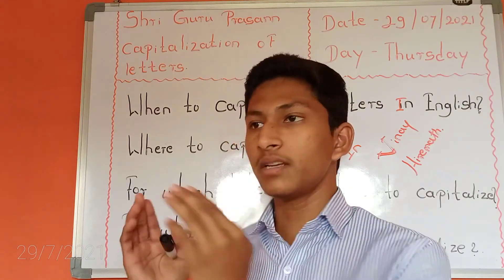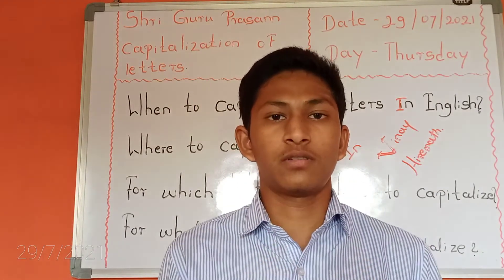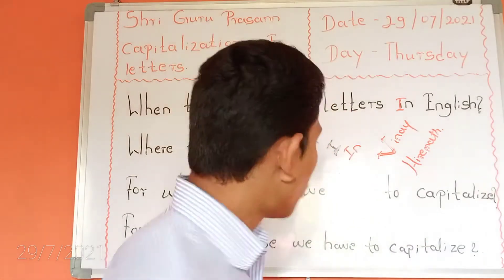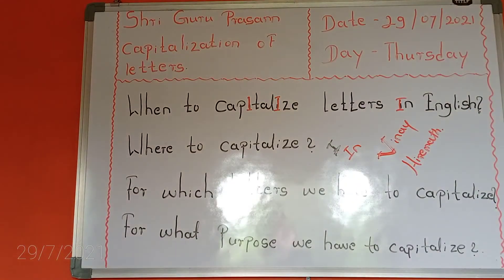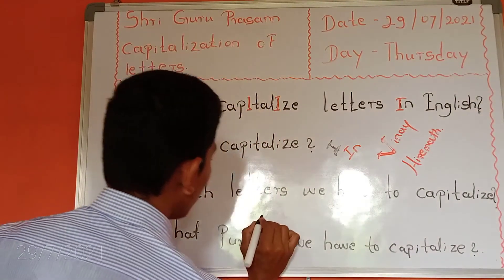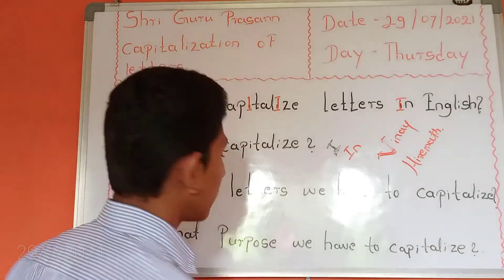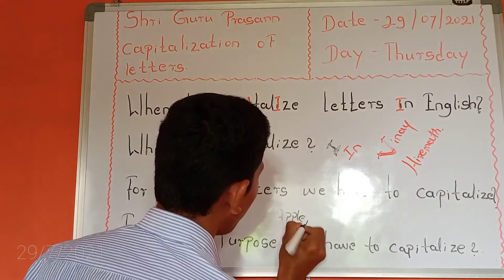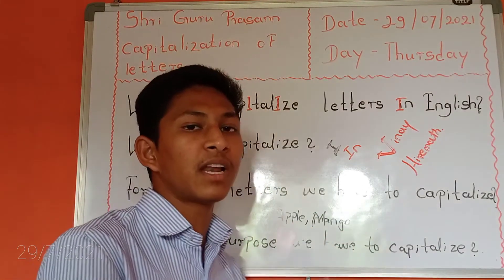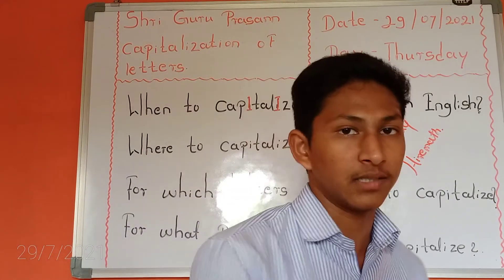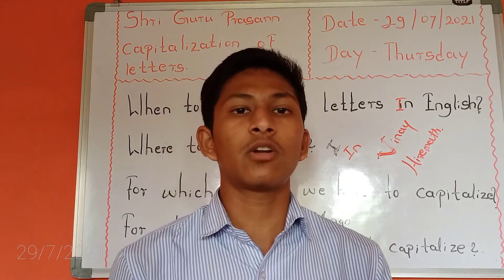Now we are going to discuss the don'ts. Don't capitalize letters randomly. You don't have to capitalize the letter after a comma. A comma is used just to make a list — for example, apple, mango. You capitalize the first word, but after a comma you don't capitalize. If there is a proper noun or a specific noun, you have to capitalize the first letter of those.